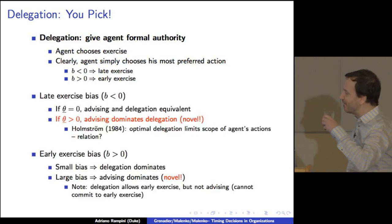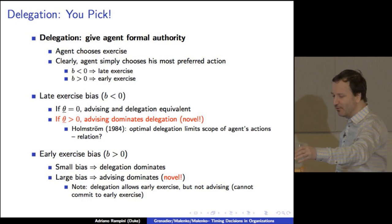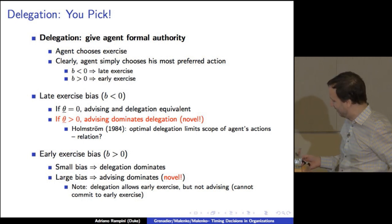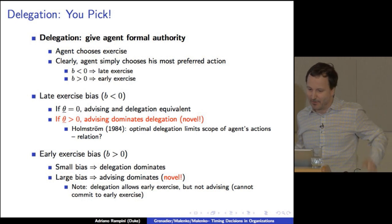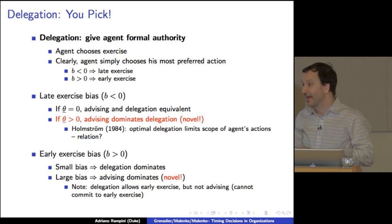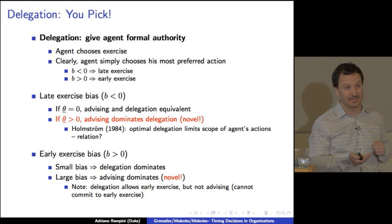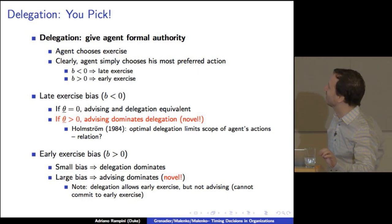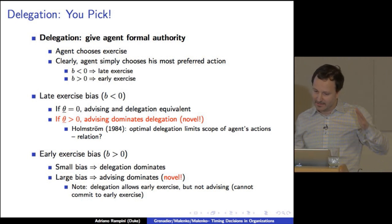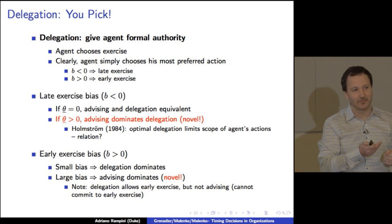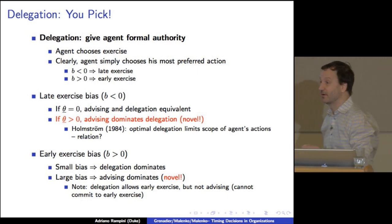So here's the value of delegation. So if you have a late exercise bias, so Andrei stressed that with a late exercise bias, delegation is not optimal. I'm going to put a slightly different spin on this. When theta lower bar is zero, actually, then advising and delegation are equivalent. When theta lower bar is positive, then advising dominates delegation. And that's novel. Essentially what happens is if you've worked down and if only very low types are left, the principal just does the action. This though reminded me of a paper by Holmstrom on optimal delegation that showed essentially that optimal delegation that limits the scope of the agent's action is typically optimal in this type of cheap talk games. And here, actually, the result here has a very similar flavor. And I think it would be nice for the authors to make this connection.